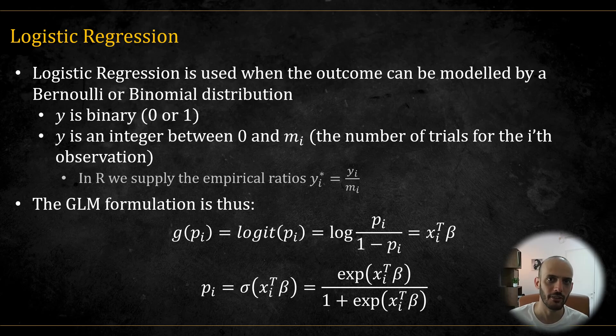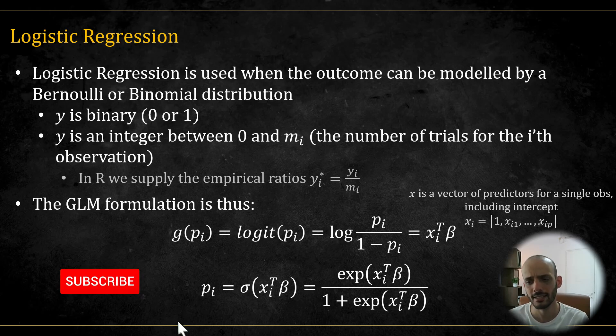So let's recap what logistic regression is. It is used when we want to model an outcome variable y by either a Bernoulli or binomial distribution. So when y is binary, 0 or 1, or when y is an integer between 0 and m_i, which can be different between different observations. In R we usually supply the empirical ratio, so the proportion of successes per observation. The GLM formulation relates the probability to the predictors through the logit link function.